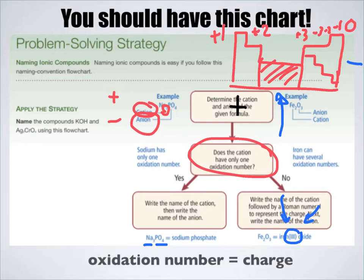If there is only one oxidation number, then all you have to do is write down the name of the metal and then write the name of the nonmetal or polyatomic ion. Recap: go through the flowchart, determine the cation and anion of the given formula. If the positive cation only has one oxidation number, you can just write down the name of the cation and then the anion. If not, you have to put down a Roman numeral, which means you have to figure out what the charge of that transition metal is.